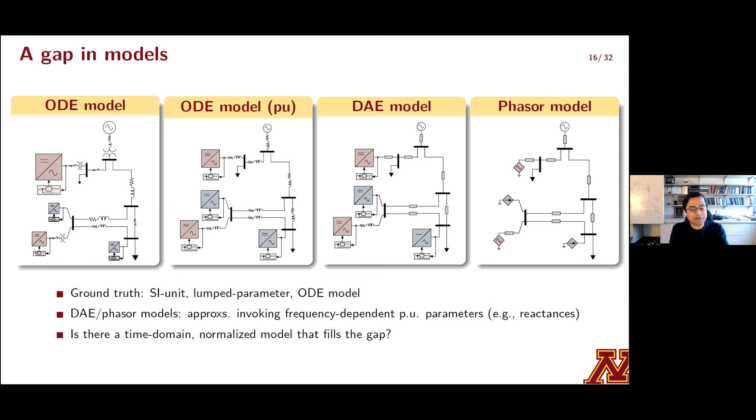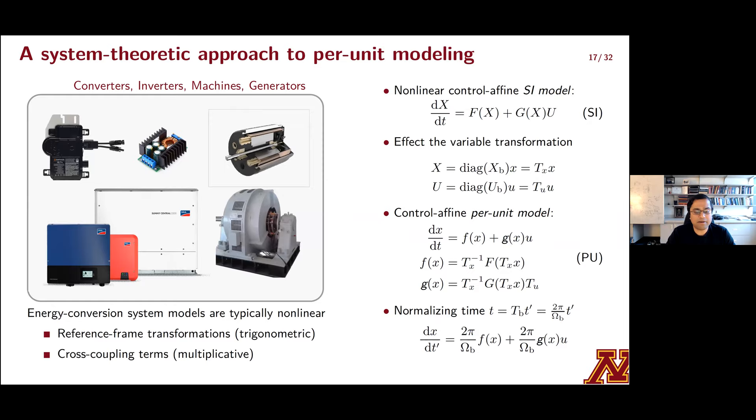So let's take a look at what we are offering for per unit modeling. I'll discuss this in a very system theoretic framework. So to start with, we look at what are the interfaces that we are trying to model. And it turns out that the dynamics of typical power conversion interfaces, whether they're converters, inverters, machines, generators, they can all be expressed in this control affine form shown in this equation tagged SI on the right. This model is written with all variables and parameters expressed in SI units. Non-linearities in these models typically stem from aspects like trigonometric terms that capture spatial effects or reference frame transformations. But a common theme is that most of these models are linear in terms of how control signals feed it.